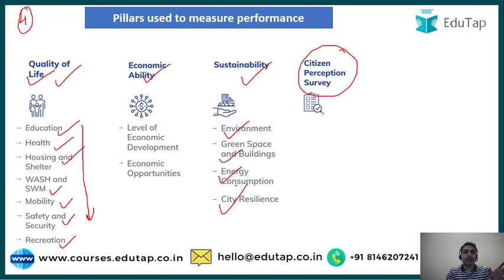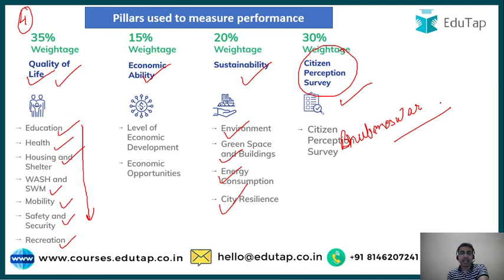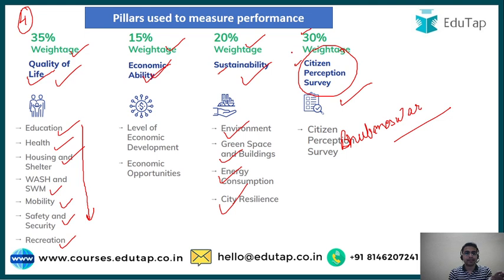These are the things important for a citizen to live a good life. The fourth pillar, the Citizen Perception Survey, captures citizens' perceptions about the life they are living in their cities. Bhubaneswar is the city that topped the CPS scores. The four pillars have different weightages: Quality of Life has 35%, Economic Ability has 15%, Sustainability has 20%, and Citizen Perception Survey has 30% in the overall score.